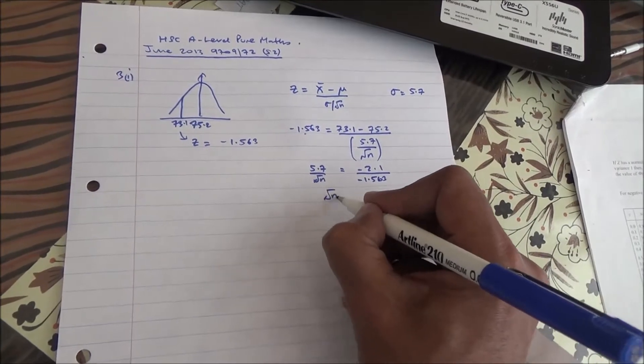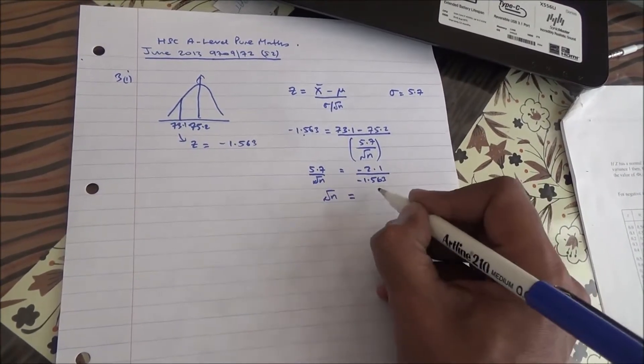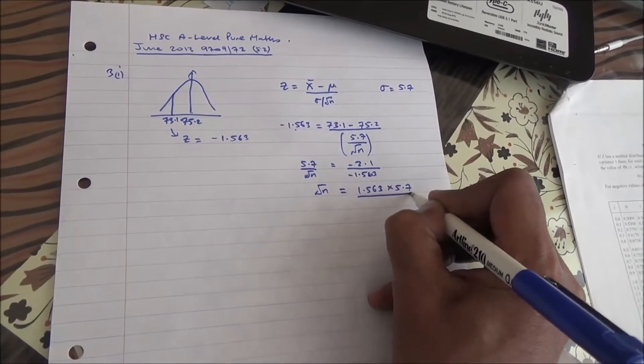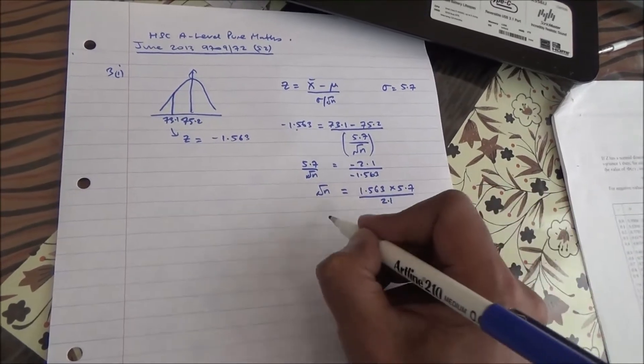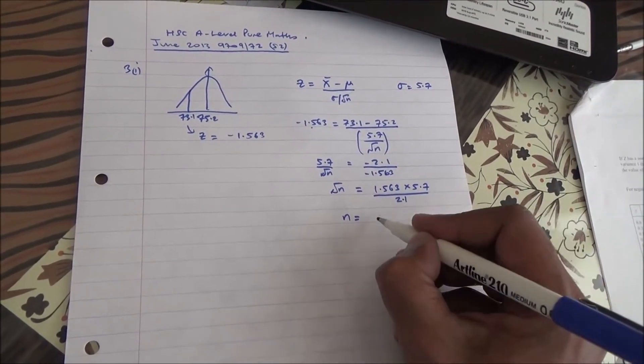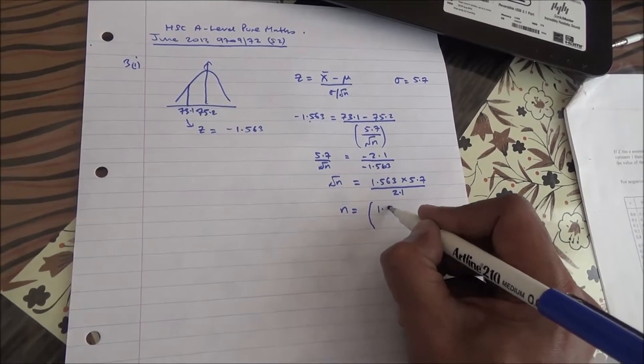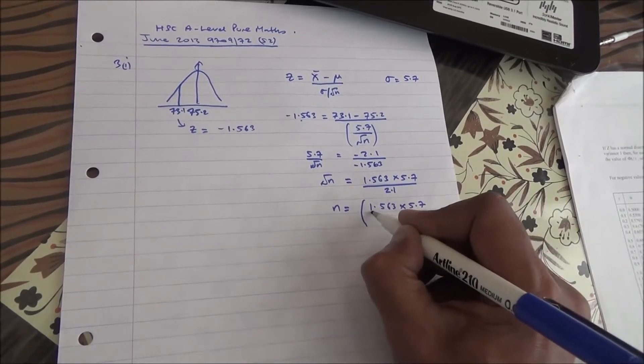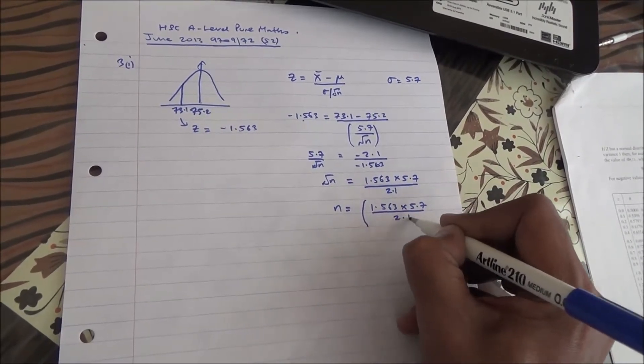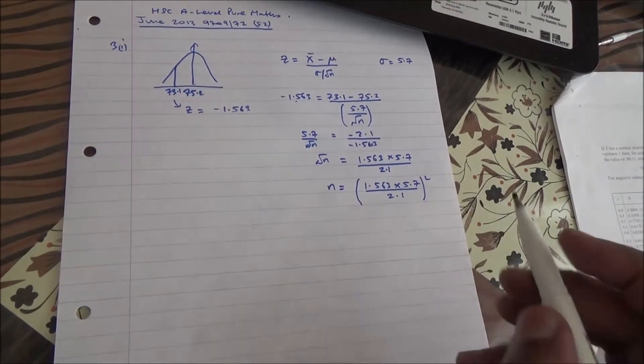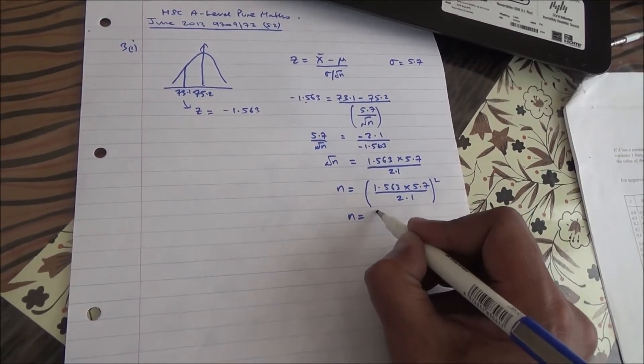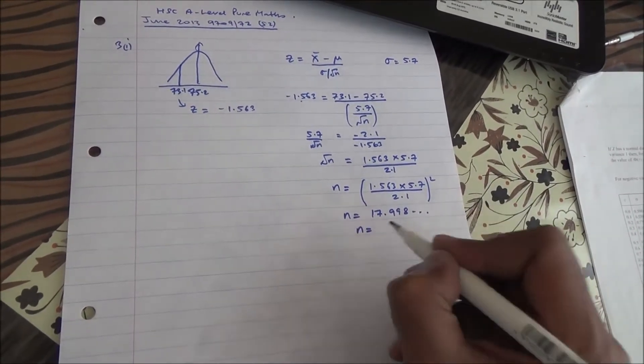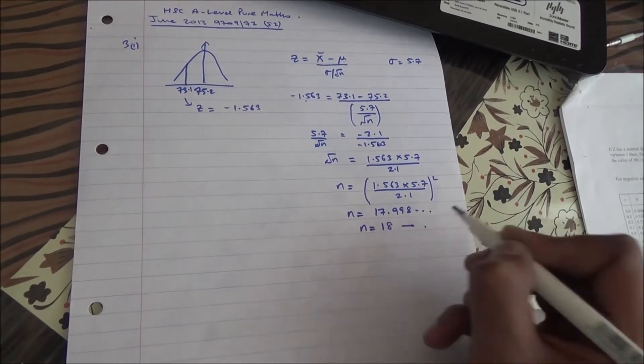And if you go further with this, you've got the square root of n is equal to 1.563 times 5.7 over 2.1. And n is going to be equal to the square of what we've just computed here. And if you do that on your calculator, you'll end up with n being 17.998 and so on. Therefore, we can confidently say that n is equal to 18. So here we are for the first part.